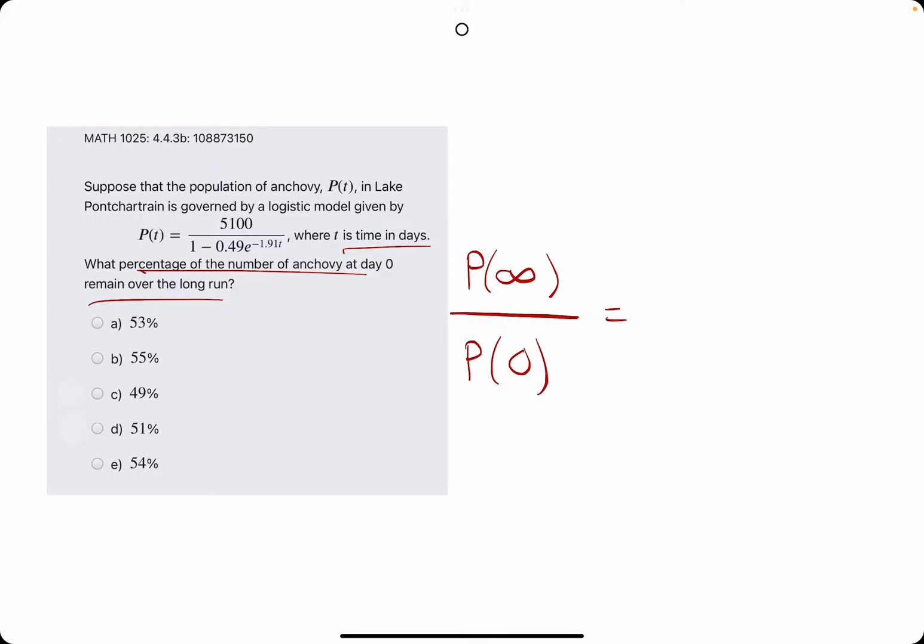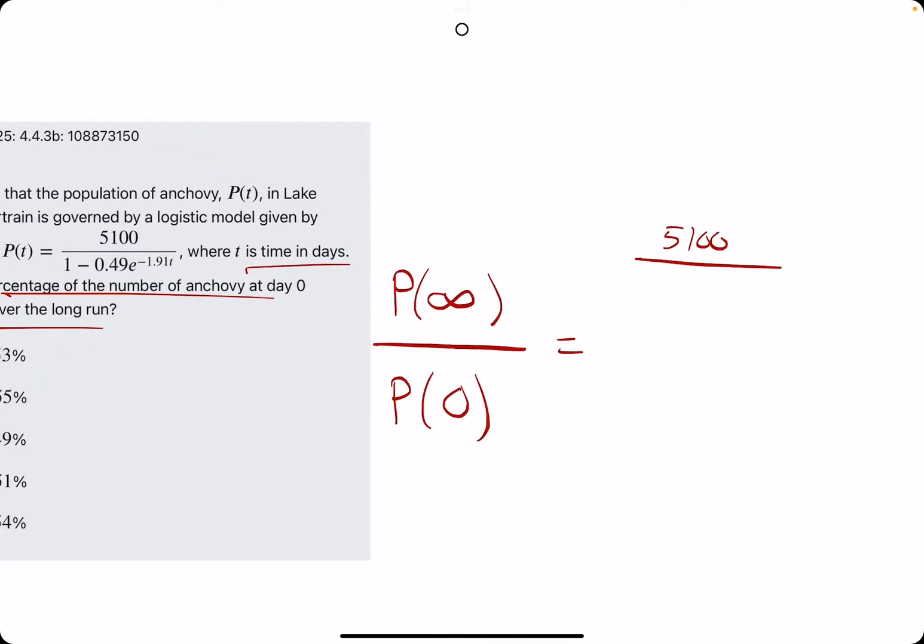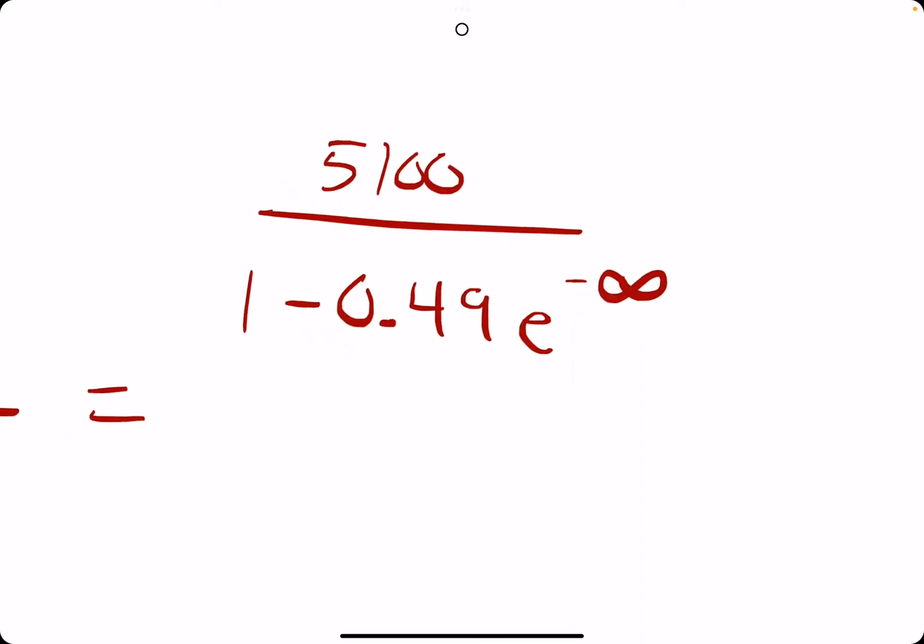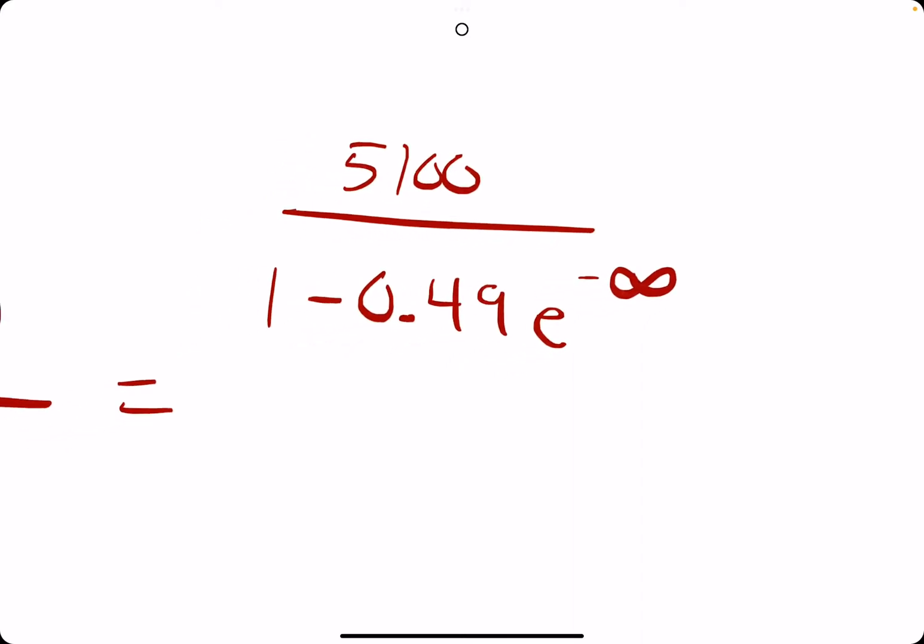So, when we evaluate this function as t goes to infinity, we will have on the bottom one minus 0.49e to the negative 1.91 times infinity. So, what we're going to do is sort of break down what's happening with this. If we have e to the negative 1.91 times infinity, the infinity sort of swallows this number here, right? So, it just becomes negative infinity in the exponent.